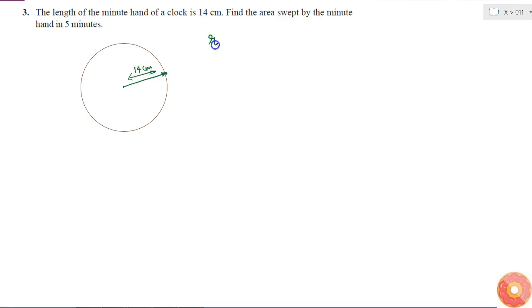That means if I consider this outside as my main circle, then the radius of the circle is equal to 14 centimeters. Find the area swept by the minute hand in 5 minutes. So in 60 minutes, the minute hand covers the total circle area, which equals πr², because in 60 minutes the minute hand completes one revolution.